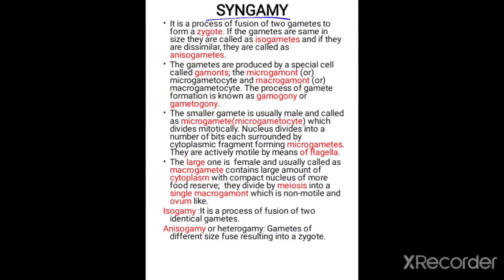Now let us come to the next type of sexual reproduction — syngamy. This is the process of fusion of two gametes to form a zygote. If the gametes are the same in size they are called isogametes; if they differ in size or are dissimilar, such gametes are called anisogametes.